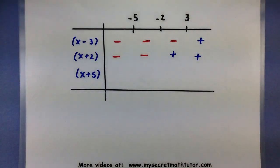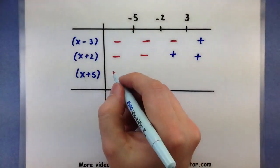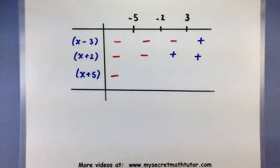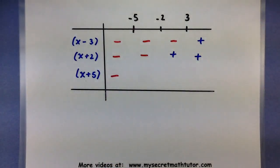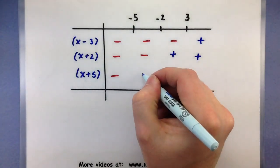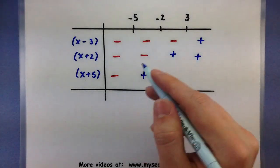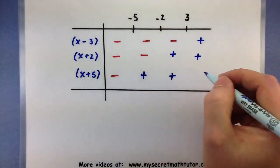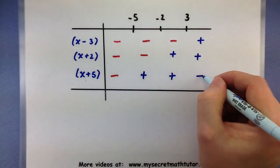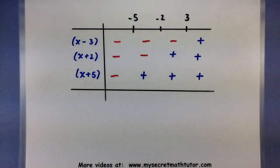On to our last factor, x plus 5. Something less than negative 5, plus 5 — negative. Something between negative 5 and negative 2, maybe negative 3 — will be positive. 0 plus 5 is positive, and 4 plus 5 is positive. So now I know what each of the factors will be around these zeros.